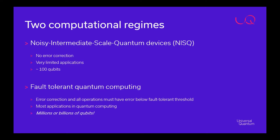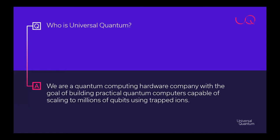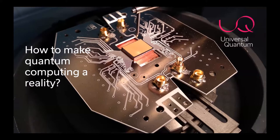The price you pay for fault tolerance is needing lots of extra qubits — numbers like millions or even billions of qubits. That is really the regime associated with most applications in quantum computing. This is why at Universal Quantum we have a different ambition: we focus on developing technology capable of scaling truly to millions of qubits.